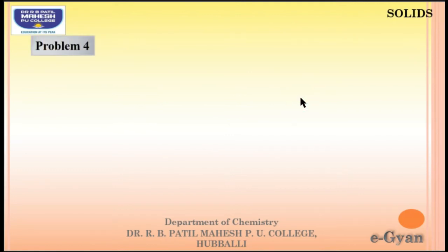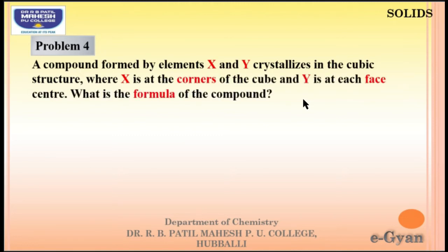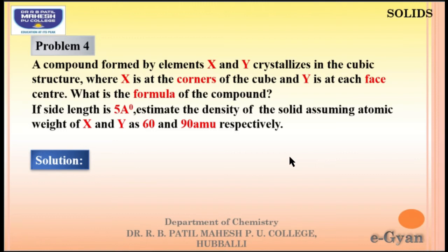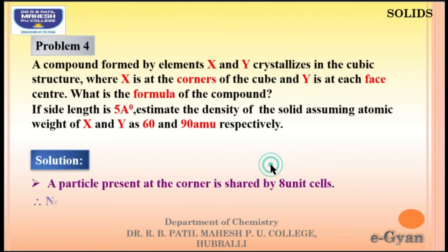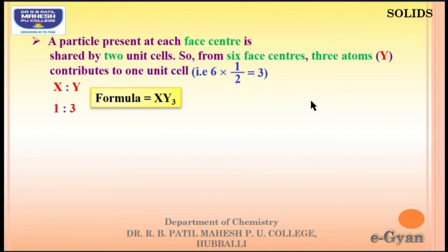Fourth numerical: a compound formed by elements X and Y crystallizes in a cubic structure where X is at the corners and Y is at the face centers. A particle at the corner is shared by 8 unit cells, so number of X atoms = 8 × (1/8) = 1. A particle at each face center is shared by 2 units; with 6 faces the contribution = 6 × (1/2) = 3. Ratio is 1:3, so the formula is XY₃.